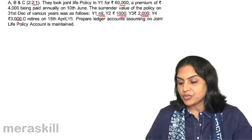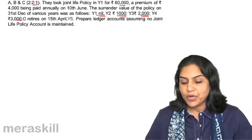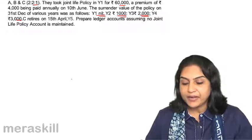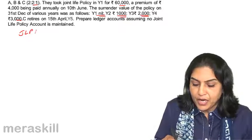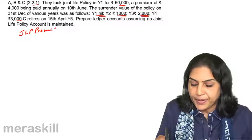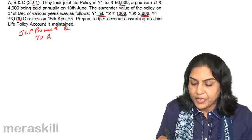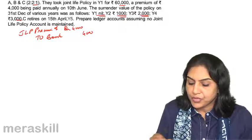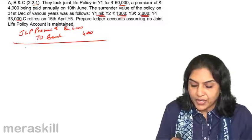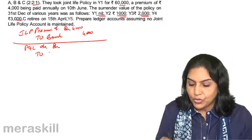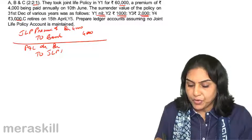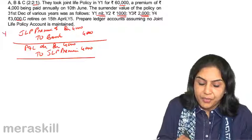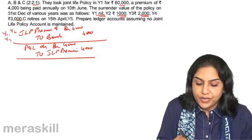Prepare ledger accounts assuming no joint life policy account is maintained. Basically, every year we will pass the entry: joint life policy premium account debit — or insurance premium account debit — 4,000 to bank. And at the end of the year, every year, we will do profit and loss account debit to insurance premium or joint life policy premium, 4,000. This is repeated every year from year 1, year 2, year 3, and year 4.